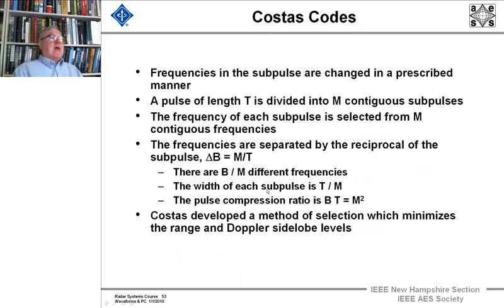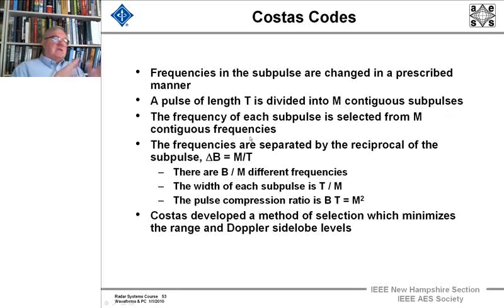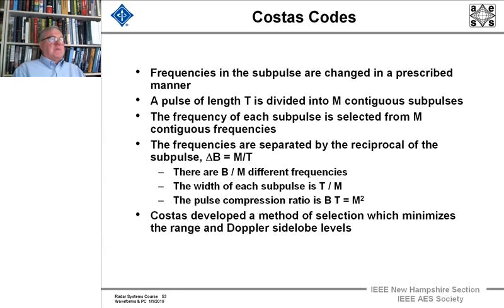You just take the numbers you get and modulo 360, and that would be your M by M polyphase Frank codes. And lastly, there are Costas codes, where the frequencies within a subpulse are changed in a prescribed manner. The pulse length T is divided into M continuous subpulses. The frequency of each subpulse is selected from M contiguous frequencies, separated by the reciprocal of the subpulse, with bandwidth divided by M different frequencies.